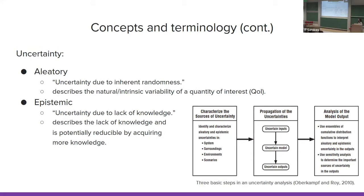After defining these two types of uncertainties, in the literature by Oberkamp and Roy in 2010, they defined three steps applicable when using models and running simulations. First, characterize the source of uncertainty — which kind of uncertainty exists within the model, whether it's aleatory, epistemic, or a combination of both. Second, propagate the uncertain inputs within the model to produce uncertain outputs, analyzed via ensemble of cumulative distribution functions. Third, perform sensitivity analysis such as Sobol indices to achieve the desired results.